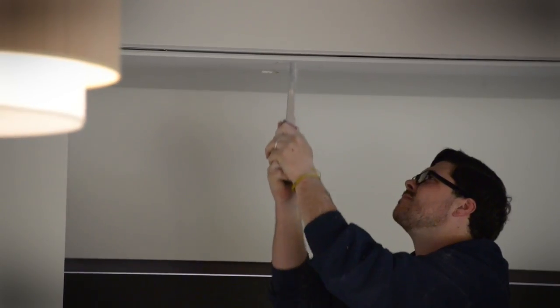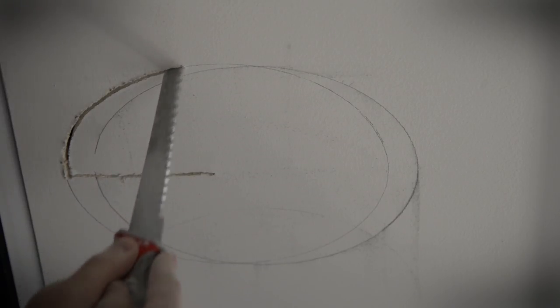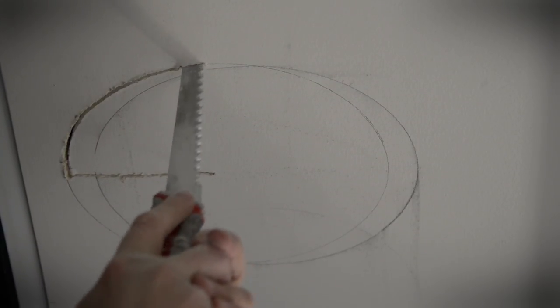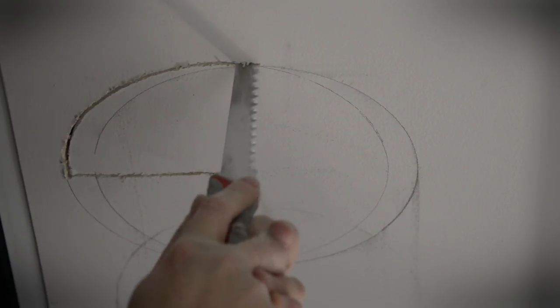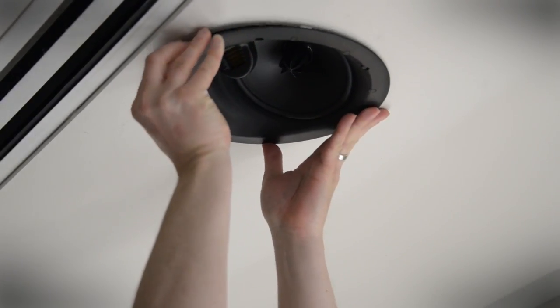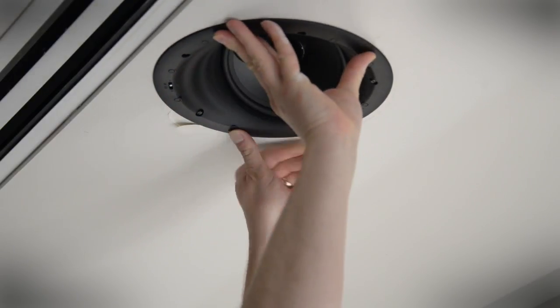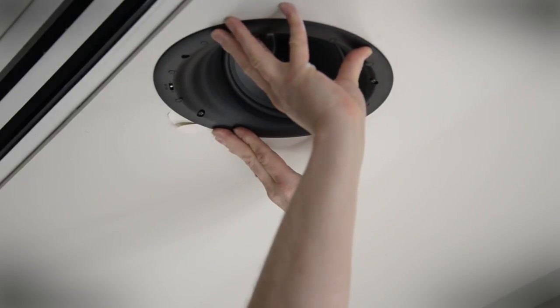Now let's cut our hole. Grab your drywall saw, line it up with the outer edge of your circle, and push it up into the drywall, then start making your cut around the line. Remember, you can always take away but you can't add anything back. Now that we've cut our hole out, let's test and make sure that the speaker fits up into the location well. If it's a little tight, you might want to just shave a little extra drywall off. A little extra space is not the end of the world.